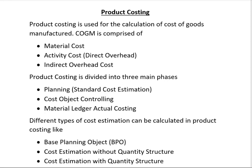Hello everyone. Today we are going to start Product Costing. Product Costing is a separate sub-module within Controlling, like Profit Center Accounting, Cost Center Accounting, and Profitability Analysis. Product Costing is used for the calculation of Cost of Goods Manufactured, which is comprised of material cost, activity cost, and indirect overhead cost.